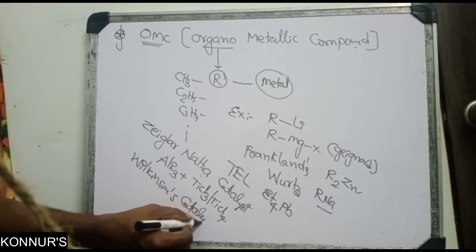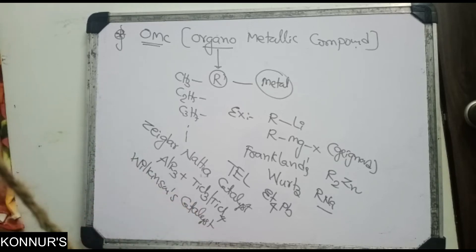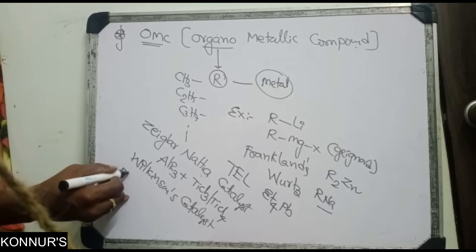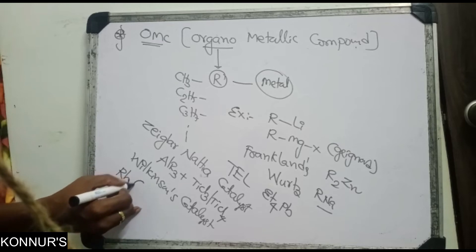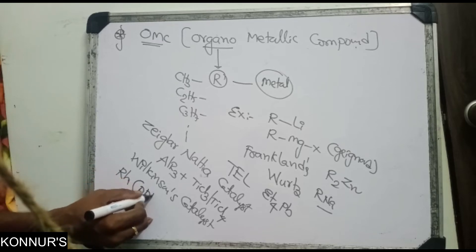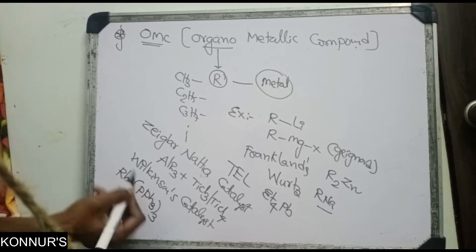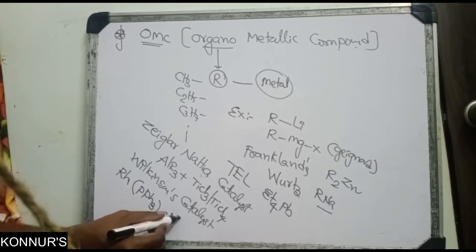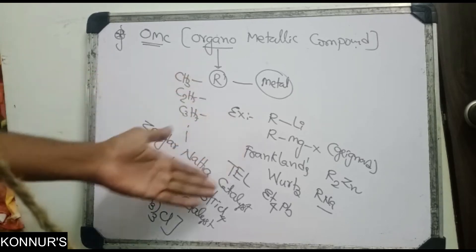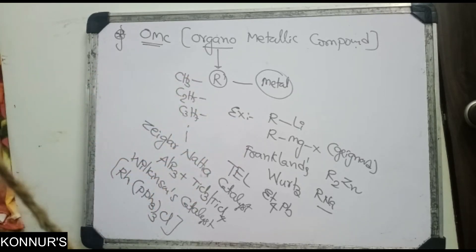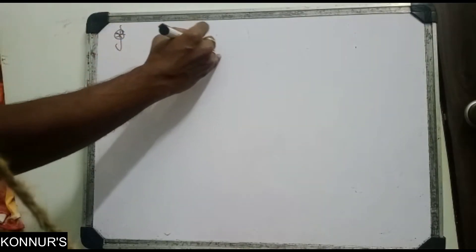The combination of ALR3 plus TiCl3 or TiCl4 is the Ziegler-Natta catalyst. Wilkinson's catalyst is also important: it is tris(triphenylphosphine) rhodium chloride — Rh(PPh3)3Cl. These are very important for direct exam questions.